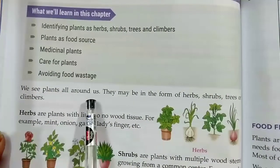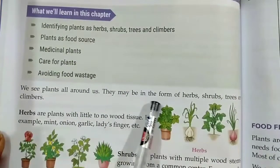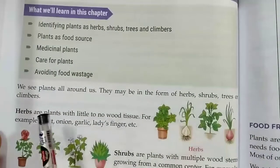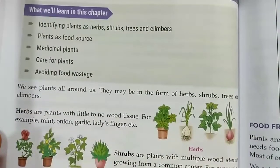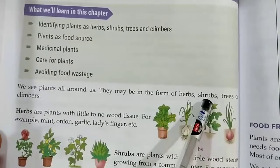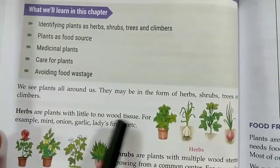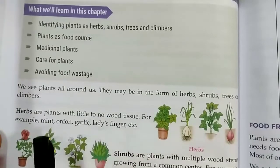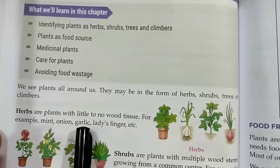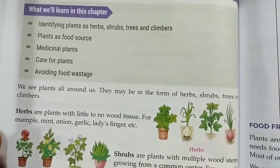We see plants all around us. They may be in the form of herbs, shrubs, trees, or climbers. So how can you differentiate them? Herbs are plants with little or no wood tissue. They are very small plants. For example, mint, onion, garlic, ladyfinger, etc. These plants without woody tissue are called herbs.